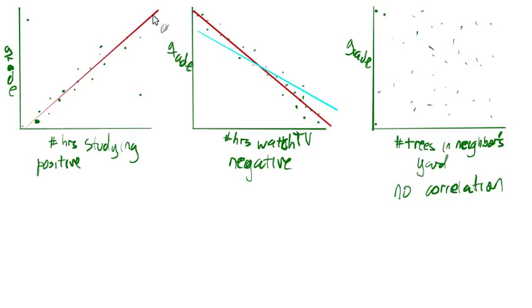All right, so we have a positive correlation, negative correlation, and no apparent correlation. So those are the three kinds of correlation.